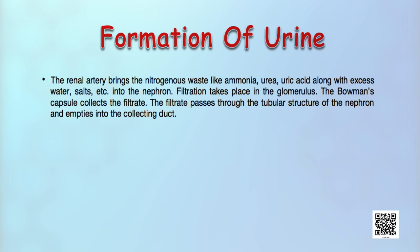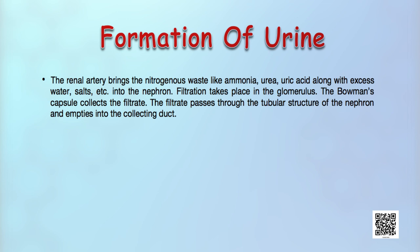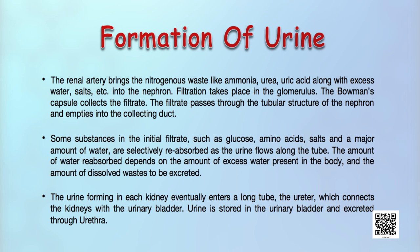The Bowman's capsule collects the filtrate. The filtrate passes through the tubular structure of the nephron and empties into the collecting duct. Some substances in the initial filtrate such as glucose, amino acids, salt and a major amount of water are selectively reabsorbed as the urine flows along the tube. The amount of water reabsorbed depends on how much excess water there is in the body and how much dissolved waste there is to be excreted. The urine forming in each kidney eventually enters the ureter, which connects the kidney with the urinary bladder. Urine is stored in the urinary bladder until the pressure of the expanded bladder leads to the urge to pass it out through the urethra.